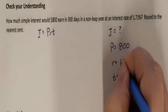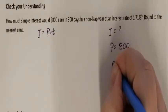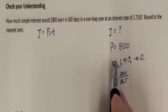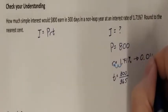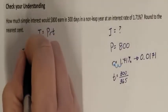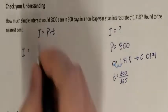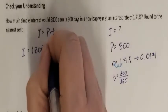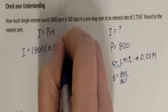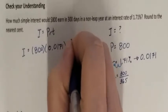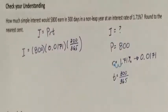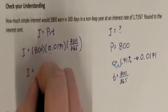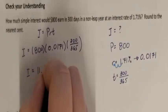The interest rate is 1.71%. I need to rewrite this as a decimal by moving the decimal point 2 places to the left. So it becomes 0.0171. I'm solving for I, where P is 800, R is 0.0171, and T is 300 over 365. Typing all of that into the calculator and multiplying, I get I to be 11.2438.